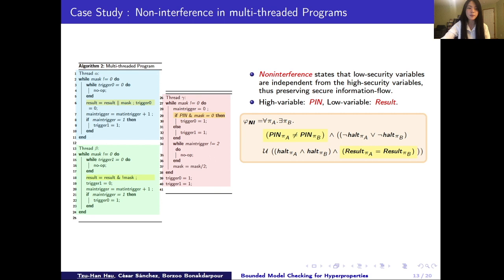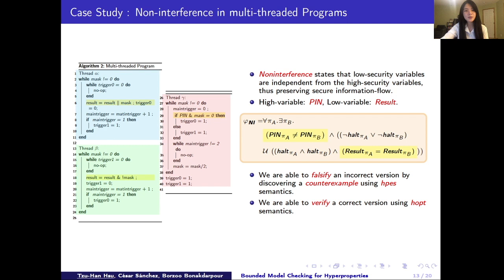Using the technique of encoding this model and the formula into QBF and solving it, for an unsafe version of this program, which leaks the high security information to a low variable, we are able to falsify it by finding a counter example using halting pessimistic semantics. On the other hand, if we set the pin value correct, this correct version of the program is actually satisfying non-interference. We use halting optimistic semantics to verify it.